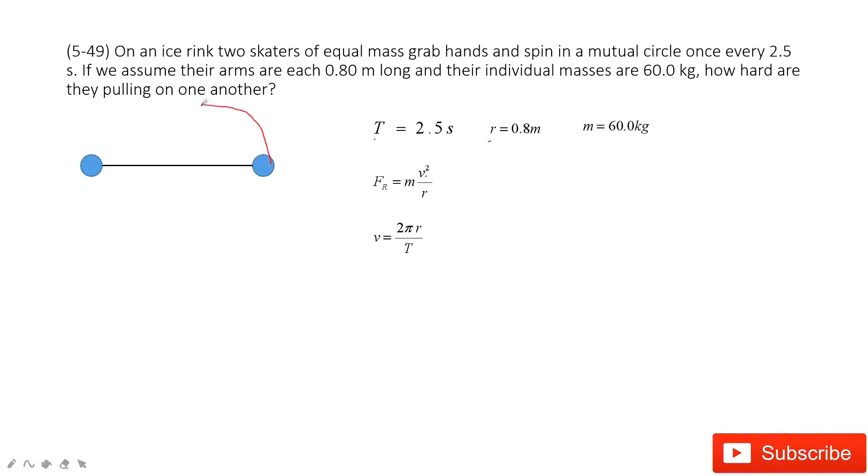The distance it traveled is 2πr, no problem, for this circle 2πr. And the time taken for one circle is one period, agree? So the velocity is the distance traveled divided by time period, so 2πr divided by T. We can get velocity.